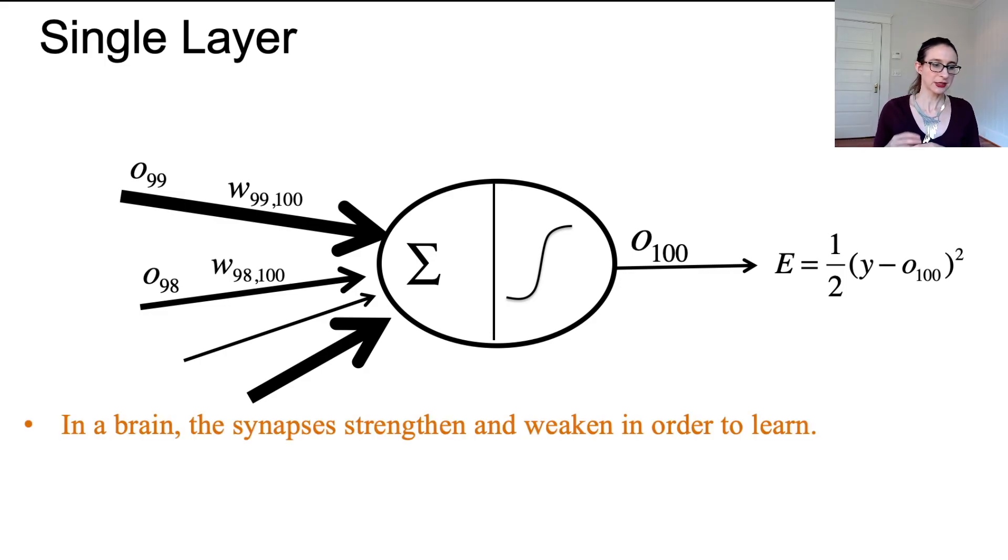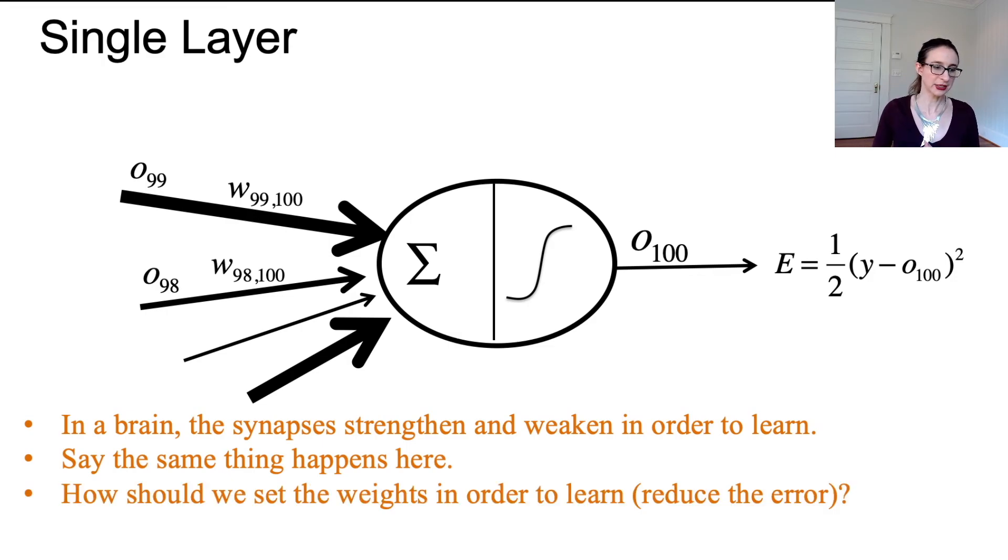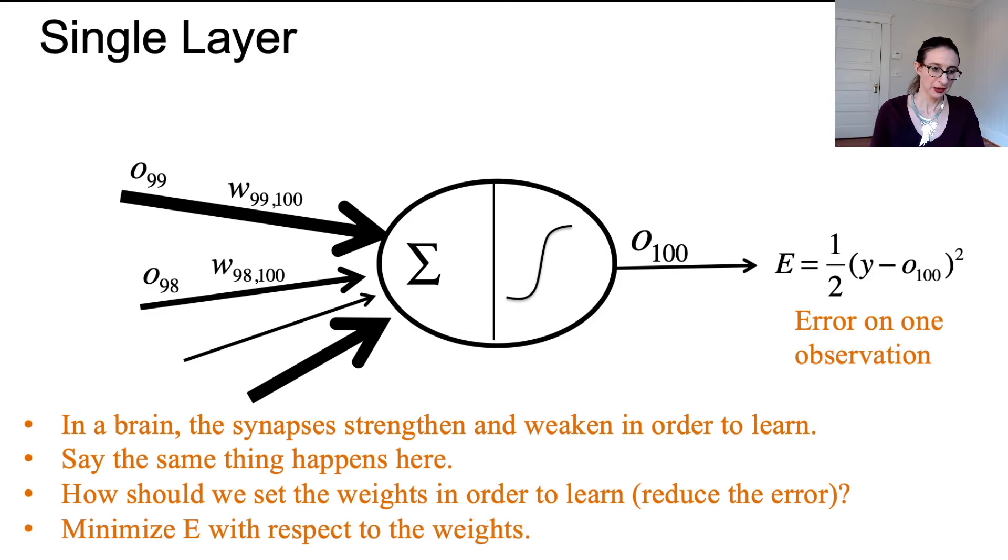In a brain the synapses strengthen and weaken in order to learn. Let's say the same thing happens here. So the question then is how should we set the weights in order to learn? In other words, how do we set the weights in order to reduce the error? We're going to minimize the error with respect to the choice of those weights.